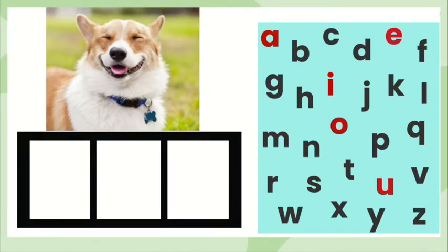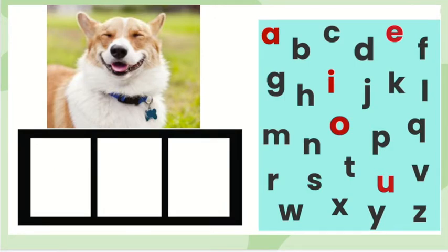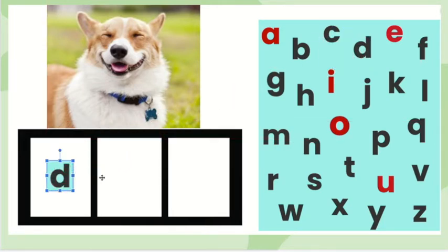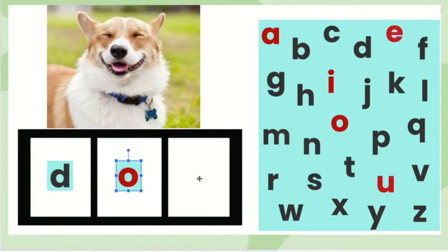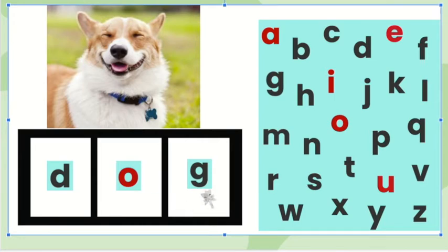Now we are going to create the word dog using letters. Dog. The first sound in dog is d, so I will use the letter D. The middle sound in dog is o, so I will use the letter O. The final sound in dog is g, so I will use the letter G. D, o, g. There are three sounds in the word dog.